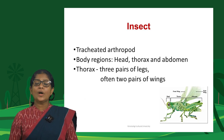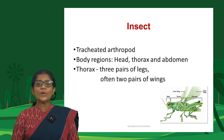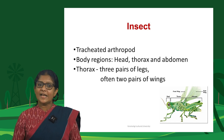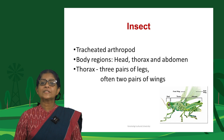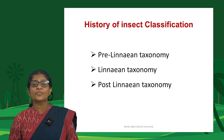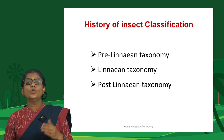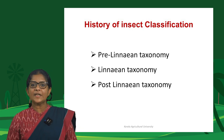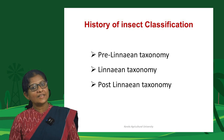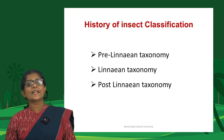Insects are tracheal arthropods whose body regions include head, thorax and abdomen, with the thorax possessing three pairs of legs and often two pairs of wings in the adult stage. The history of insect classification can be divided into three time periods: pre-Linnaean taxonomy, Linnaean taxonomy, and post-Linnaean taxonomy.